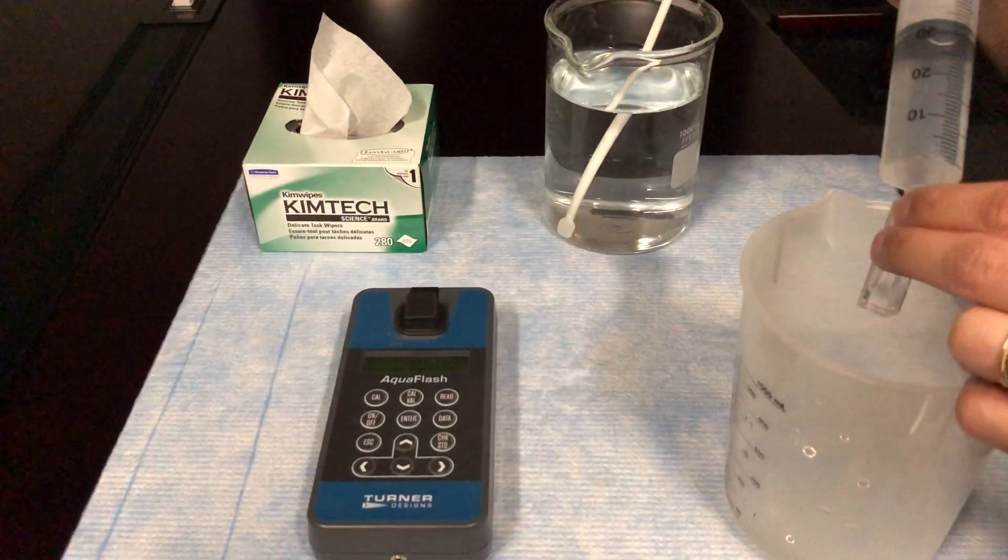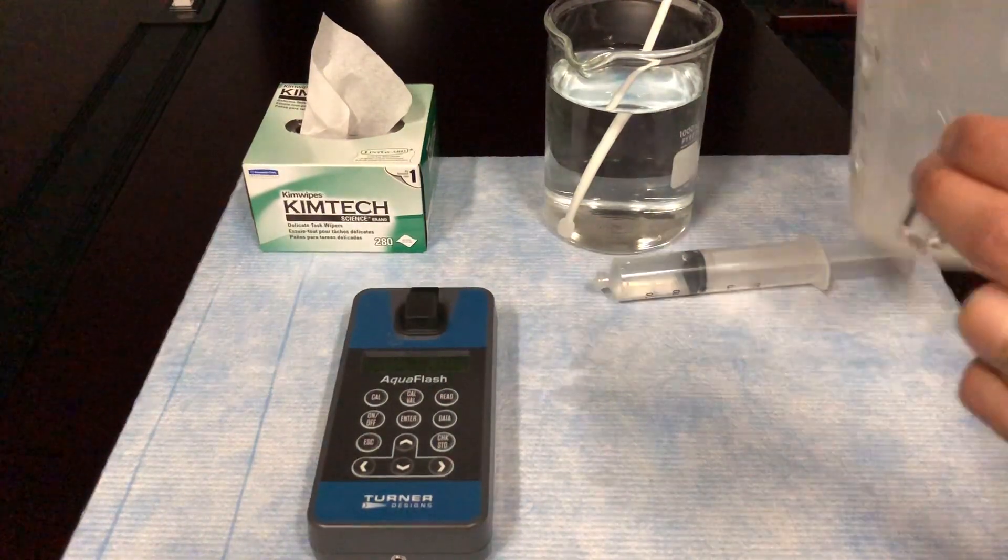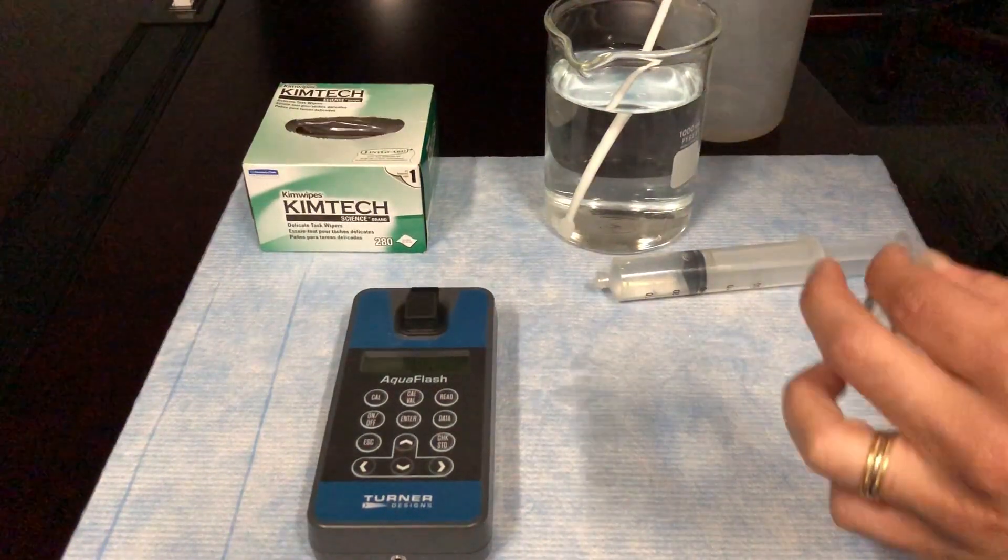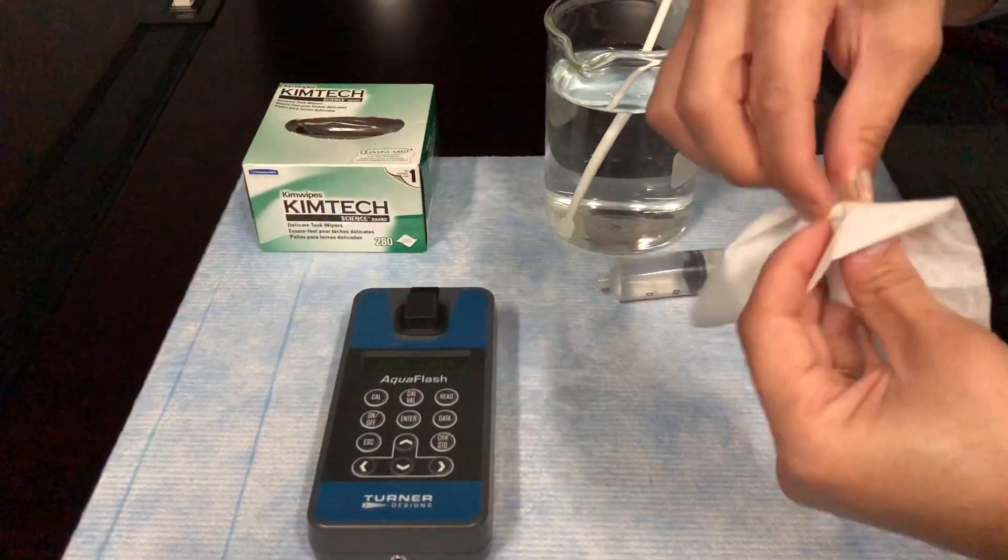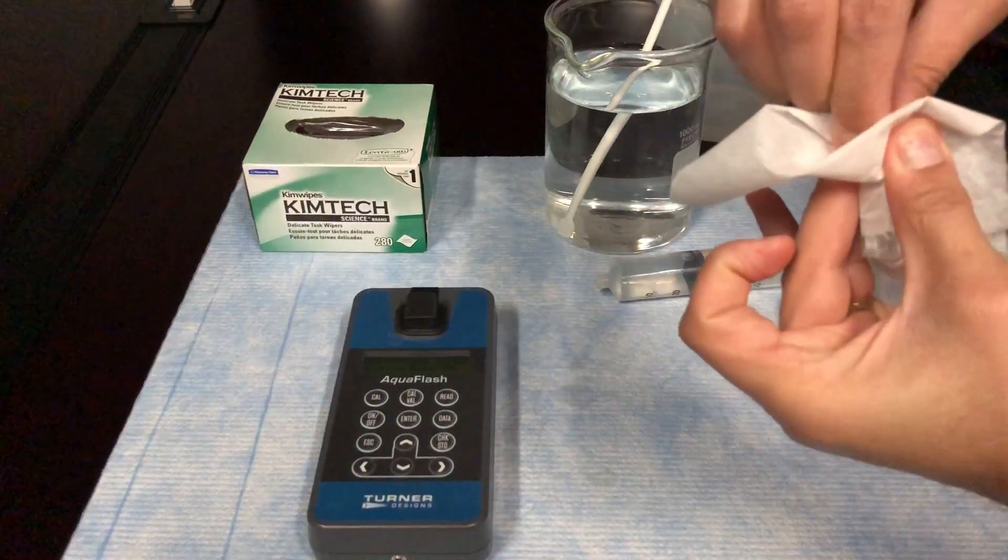Then fill your cuvette three-quarters full and use a Kimwipe to wipe down the sides of the cuvette, wiping away any moisture or fingerprints that may interfere with the measurement.